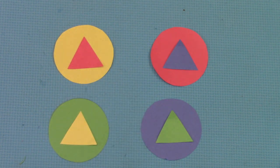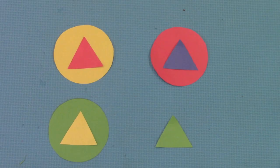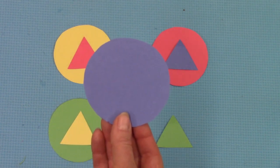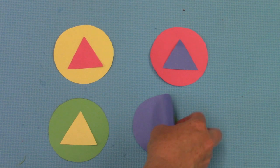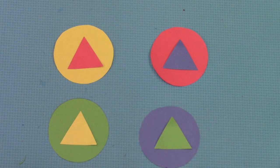All right. Close your eyes. Okay. Open your eyes. What shape is missing? Can you describe it with three attributes? Did you say large blue circle? Well done.